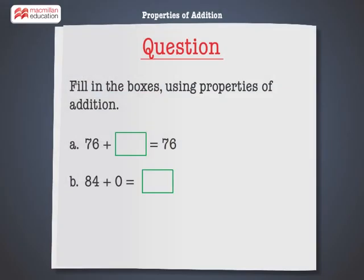Fill in the boxes using properties of addition. 76 plus dash is equal to 76. 84 plus 0 is equal to dash.